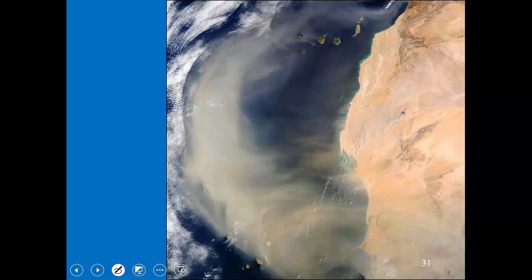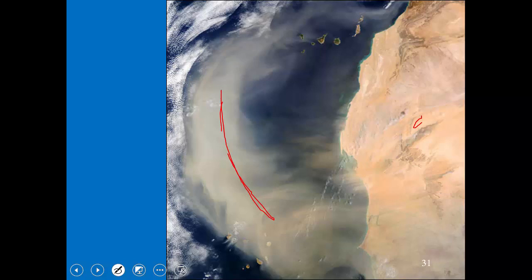Because of the dust from Africa, there are no real HNLC regions in the Atlantic. The South Atlantic is less well-studied, but as we get down to the Southern Ocean it is one of the big HNLC regions. The equatorial Pacific has HNLC conditions because it gets very little iron from the continents — the Pacific Ocean is huge, so you're far from land in the equatorial Pacific. Remember there's upwelling in the equatorial Pacific, so there are lots of nutrients but not enough iron to support primary production.